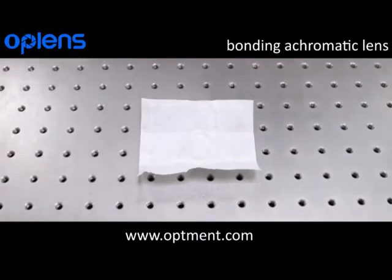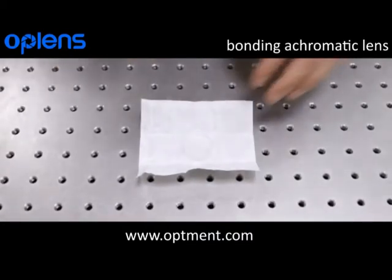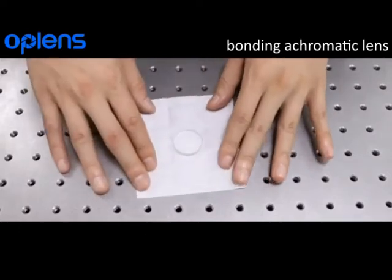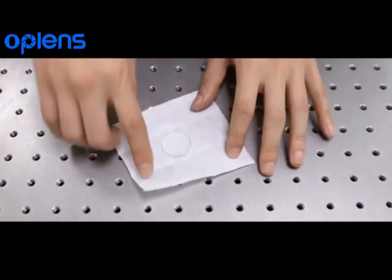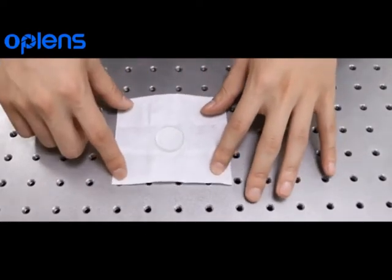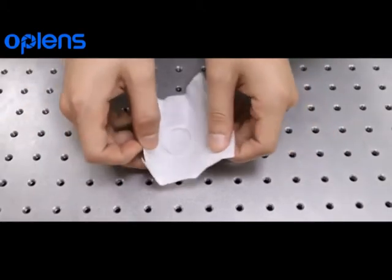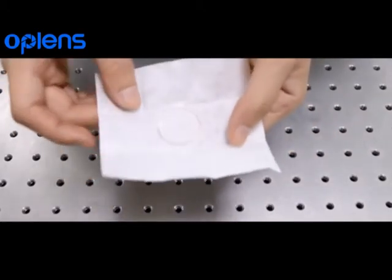The optical performance of achromatic cemented lenses is far superior to single lenses, and they have the advantages of better broadband, improved off-axis performance, smaller focal spot and smaller chromatic aberration than aspheric lenses.